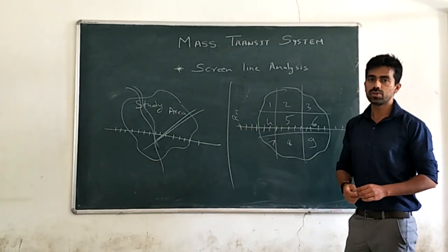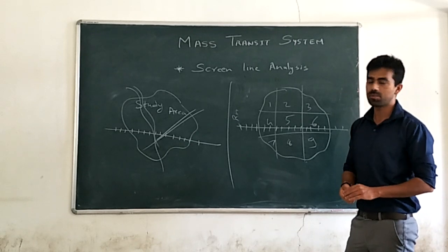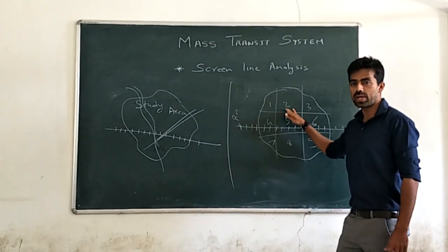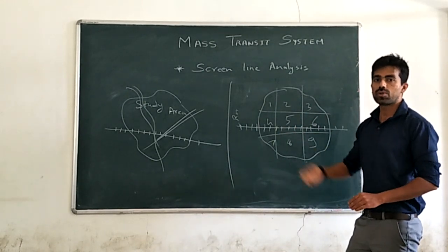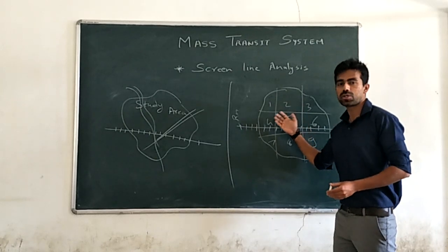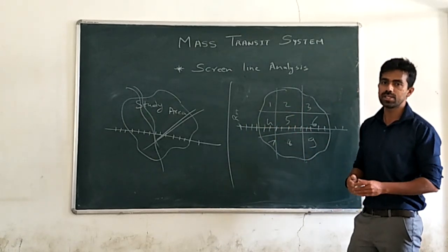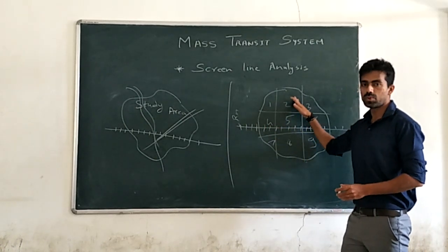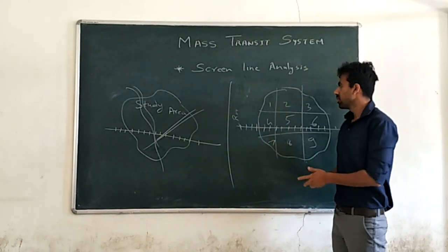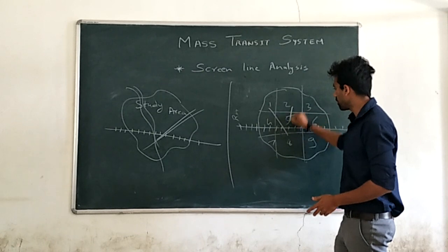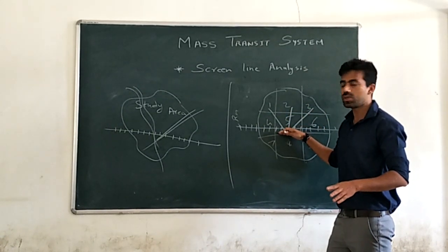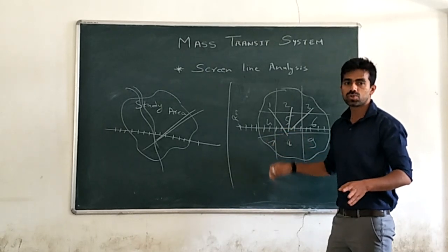From the home interview survey, we can calculate the numbers of trips in individual zones — from zone one, two, three, four, five, and six. From this individual zone traffic, the numbers of traffic crossing your railway line can be obtained by adding them up. From zones one, two, and three, they will be merged and they will cross your screen line from a specific position, crossing the screen line.